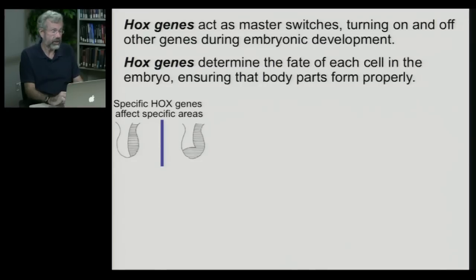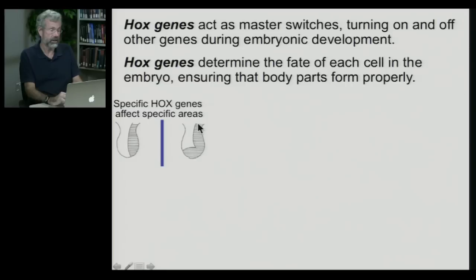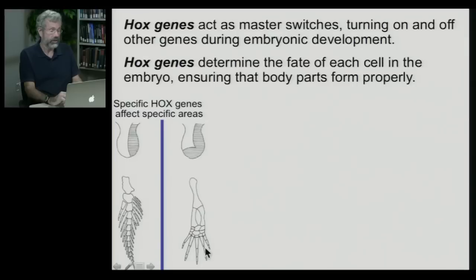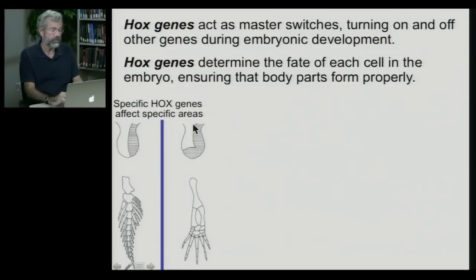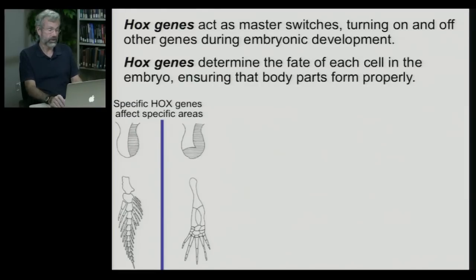Let's say we have a specific Hox gene that may influence this side of a growing limb bud. This Hox gene also has an influence on the side, but also at the tip. When the organism grows up, this will have an effect on whether it has fingers as opposed to say a flipper. So just a few genes may be involved that ultimately cause enormous differences in the forelimb.